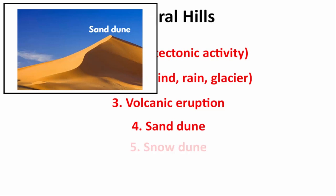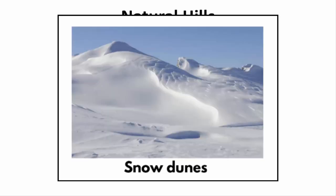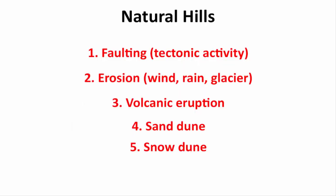Even a sand dune in a desert is a hill — it is called a hill of loose sand. In Antarctica, there are snow dunes formed by wind blowing snow into large piles. As a result, they turn into ice hills.